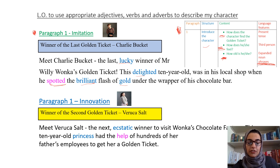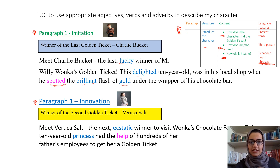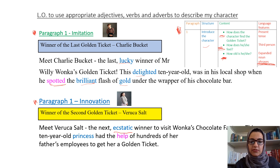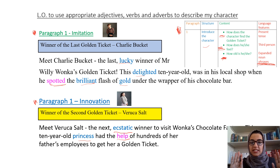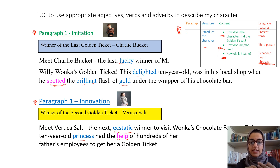Based on that, I've done my innovation. You can come up with your own. So I've got 'Winner of the second golden ticket, Veruca Salt.' That's my headline. 'Meet Veruca Salt, the next ecstatic winner to visit Wonka's chocolate factory. This 10 year old princess had the help of hundreds of her father's employees to get her a golden ticket.' Short and sweet, done. I've covered how she finds the golden ticket, how old she is, and how she feels. She feels ecstatic — that's a synonym for really, really happy.